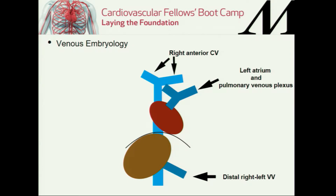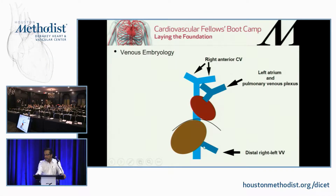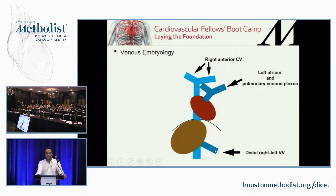As I mentioned earlier, the brachiocephalic trunks come basically from the anterior cardinal vein — the right anterior forms both of them. And then with the right atrium, they form the superior vena cava. The pulmonary veins are going to be formed by the left atrium and the pulmonary venous plexus. The portal vein is going to be the distal right vital vein.